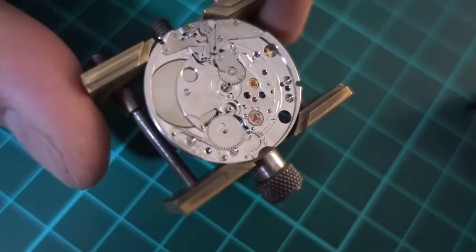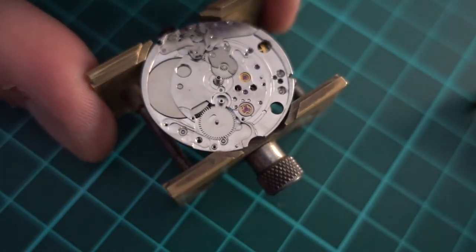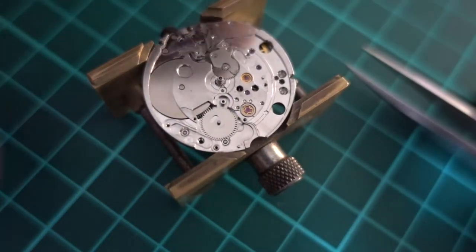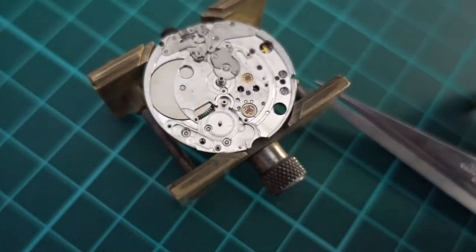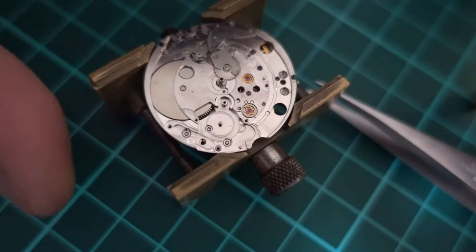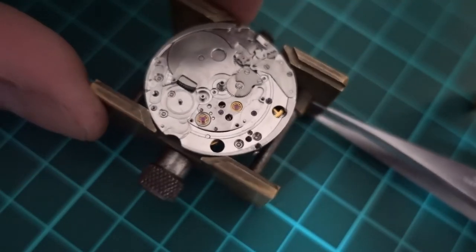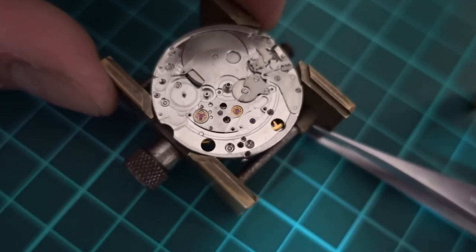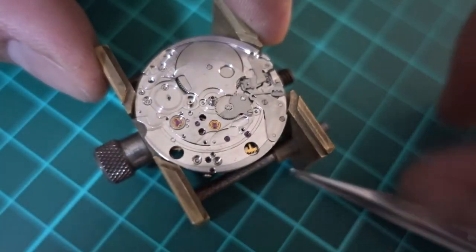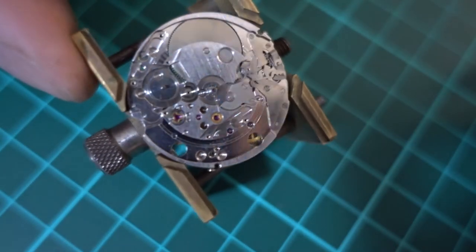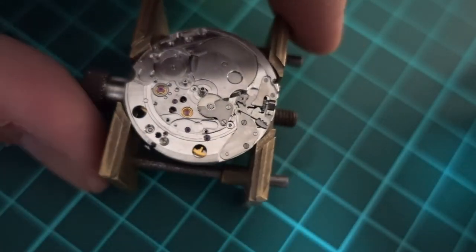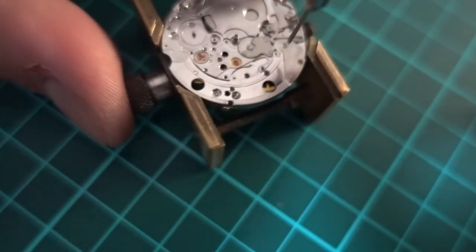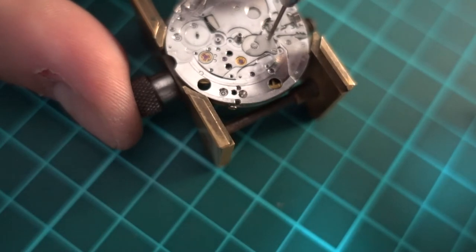A few of the other Seiko movements also had an instant date changeover. The 52 series of the King Seikos had it. Not sure what else though. The 52 series uses a very similar system, it's a cam system and it builds up pressure which then flicks over.